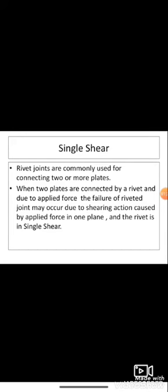There are two types of shear stress: single shear and double shear. River joints are commonly used for connecting two or more plates. When two plates are connected by a rivet and due to applied force, the failure of a riveted joint may occur due to shearing action caused by the applied force in one plane, and the rivet is said to be in single shear.